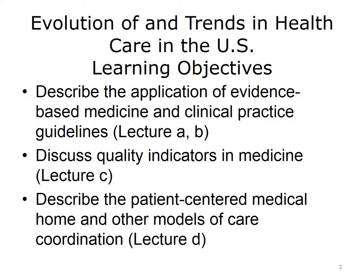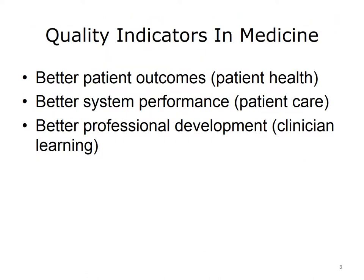The learning objectives for this unit, Evolution of and Trends in Healthcare in the U.S., are to describe the application of evidence-based medicine and clinical practice guidelines, discuss quality indicators in medicine, and describe the patient-centered medical home and other models of care coordination. This lecture will discuss quality indicators and comparative effectiveness research.